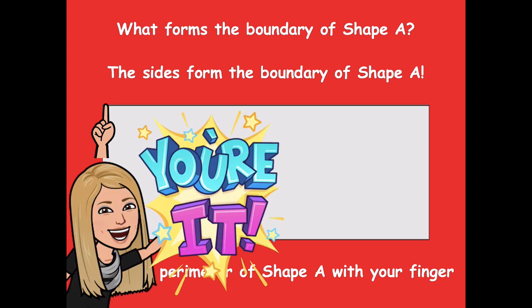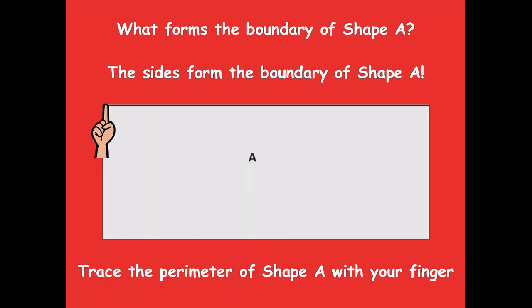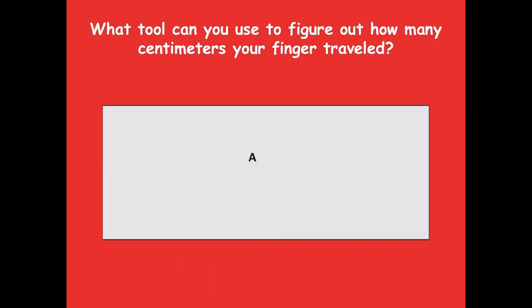I want you to trace the perimeter of shape A with your finger. Pause the video, trace the perimeter of shape A, and then click play when you're ready for the next step. What tool can you use to figure out how many centimeters your finger traveled around the perimeter? We would use a ruler.